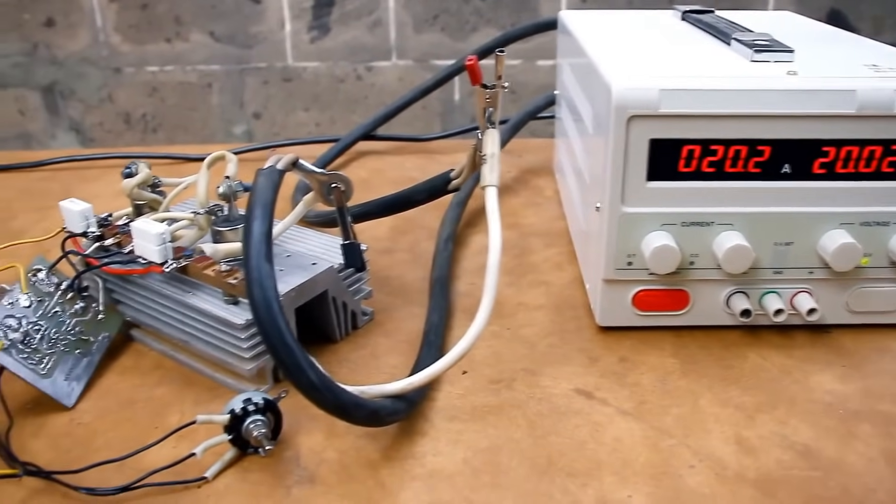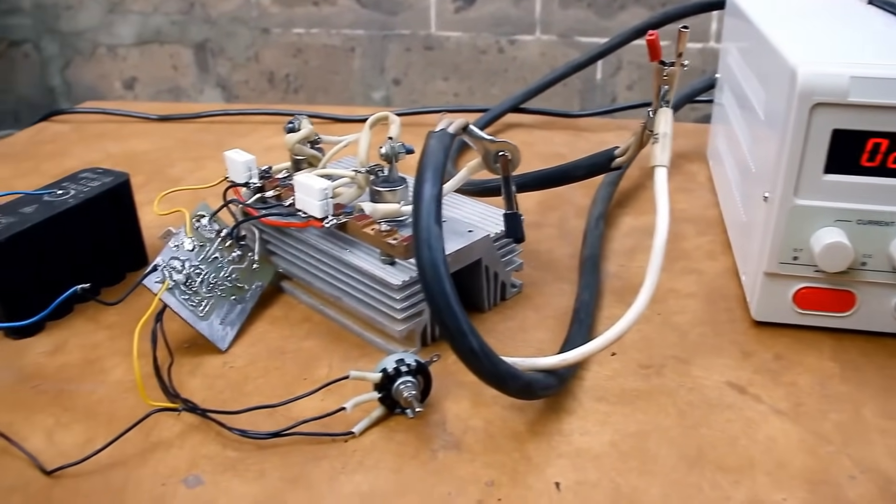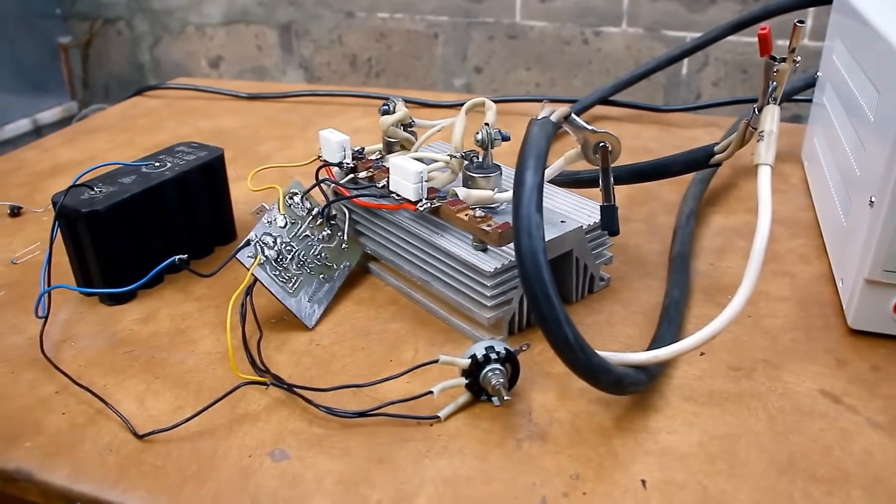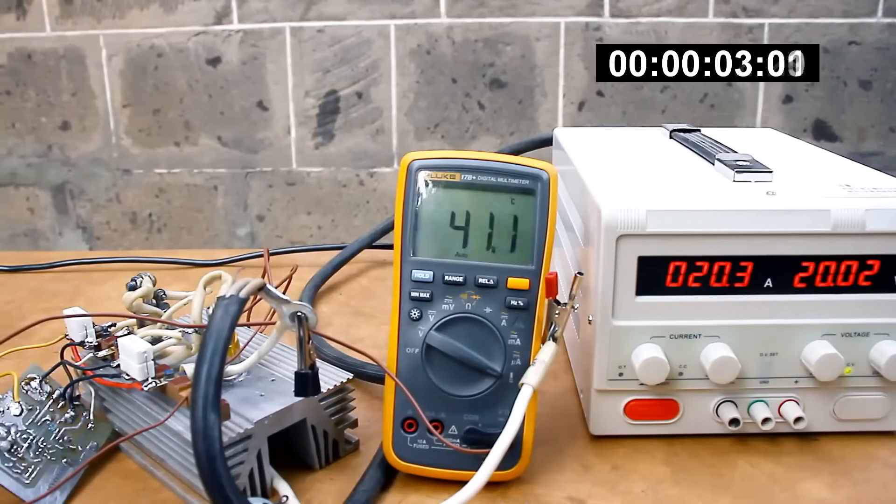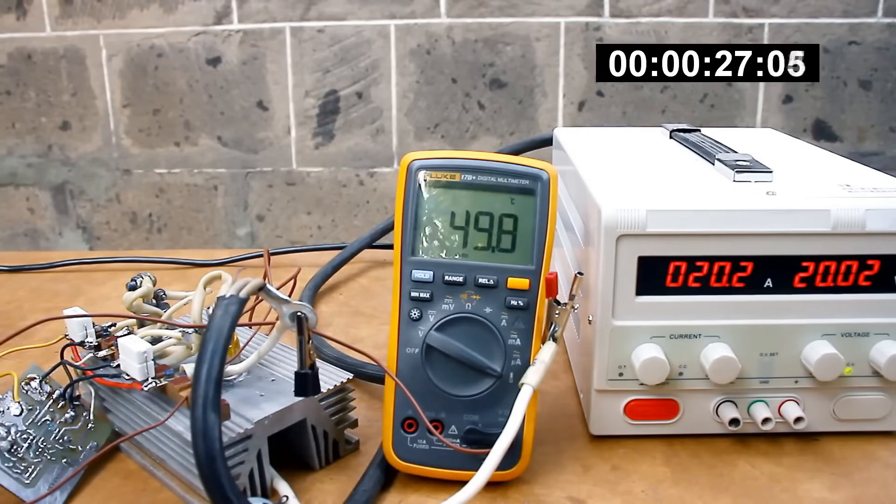Right now, our load is dissipating a colossal power of 400W for two transistors. I attached a thermometer to the transistor. As we can see, at this power, the temperature of the switches themselves is low. Therefore, this is not the limit for them. Far from the limit.